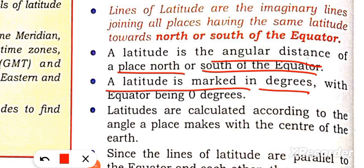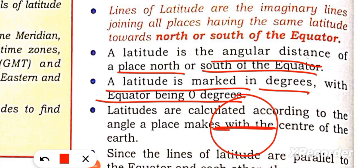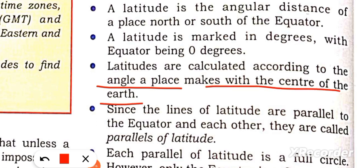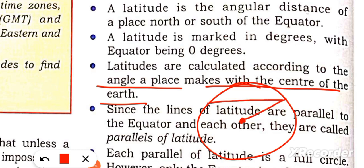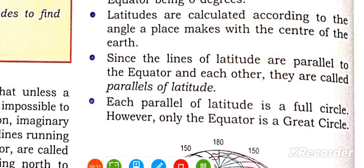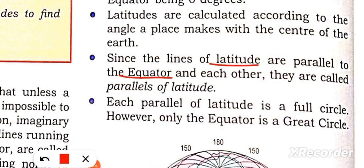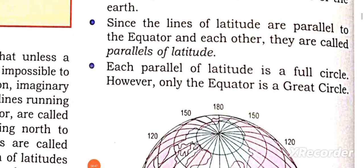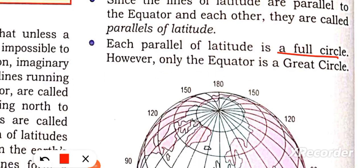Latitude is marked in degrees, with the equator being zero degrees. Latitudes are calculated according to the angle a place makes with the center of the Earth. Each parallel of latitude is a full circle.